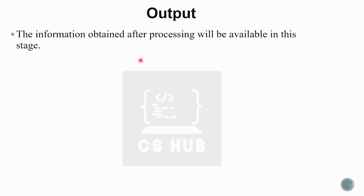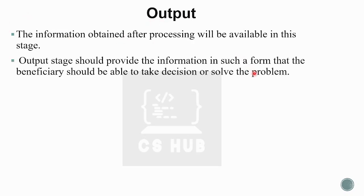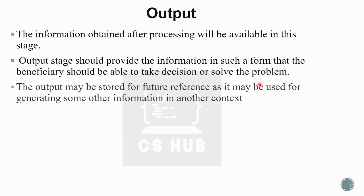Now we have the output — the information obtained after processing will be available in this stage. The output stage should provide information in such a form that the beneficiary is able to take a decision or solve the problem. The output should also be stored for future purposes or for generating other information in another context.